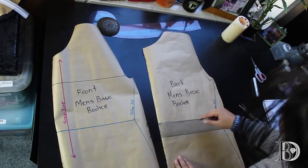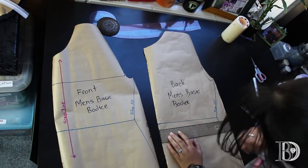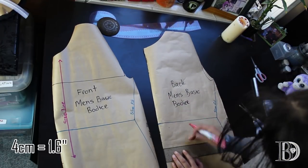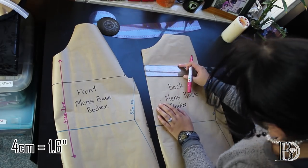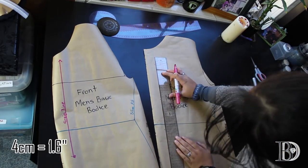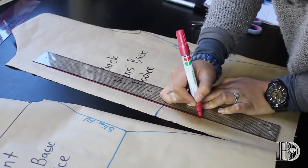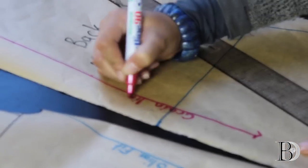As we did on the front pattern, measure a few centimeters away from the edge — I'm using 4 cm — mark it a few times along the edge, connect the dots, and label it as the grain line. And there's your front and back men's basic bodice pattern.